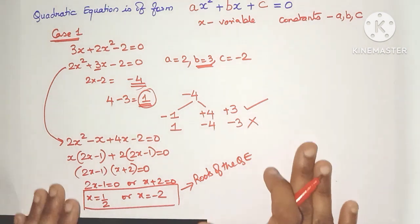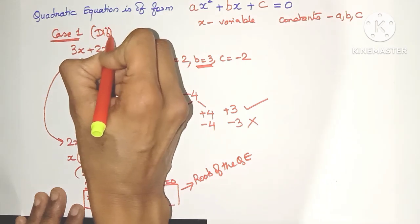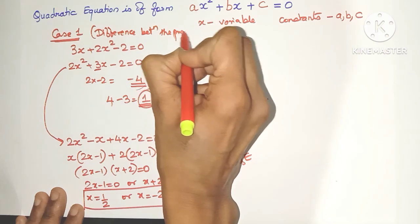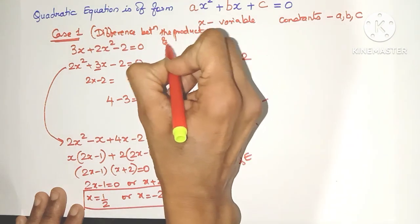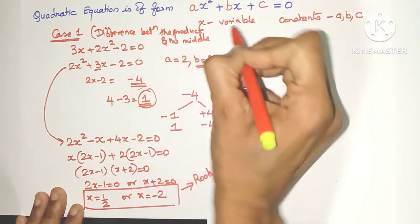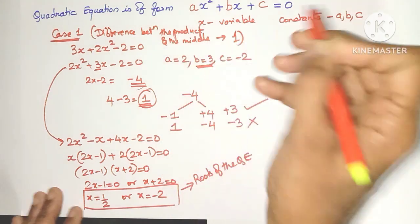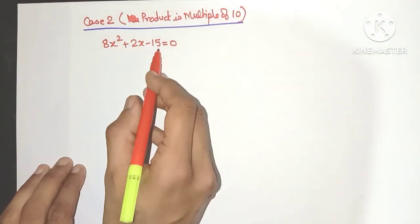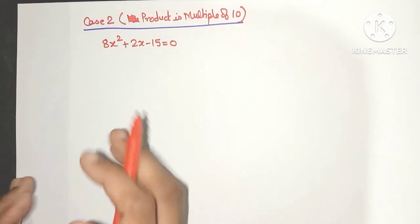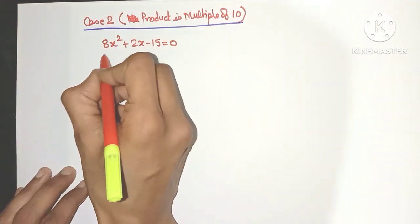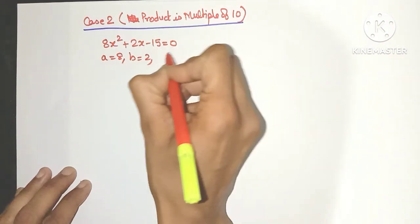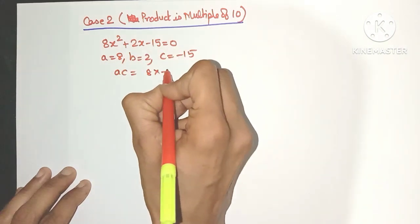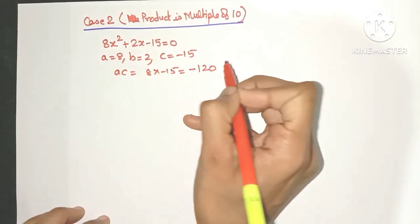So that was the first case — the difference between the product and the middle term should be 1 for Case 1 to apply. Now let's come to the second case. Here is the quadratic equation. We find the product: a is 8, b is 2, c is minus 15, so a into c is 8 into minus 15 which is minus 120.